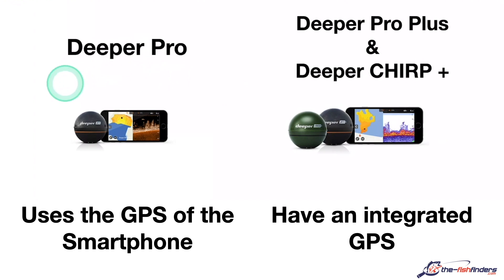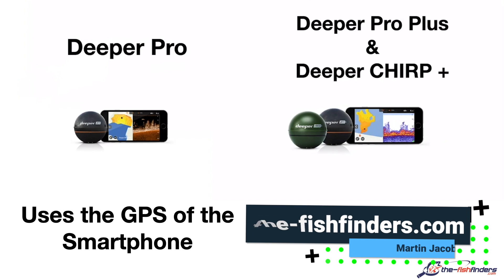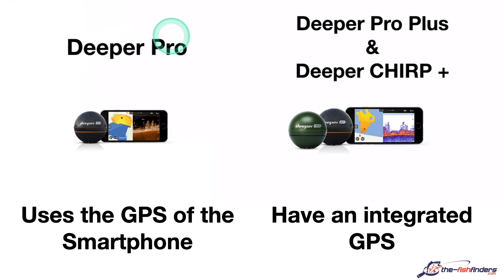There is a small difference with the Deeper Pro. It is one of the first Deeper models and has no built-in GPS, but instead uses the GPS data from the smartphone. It makes absolutely no sense to cast your Deeper Pro when your mobile phone with the GPS data is in your bag. To put it bluntly, your Deeper Pro can only be used to create maps on the boat by attaching the Deeper to the boat and placing the mobile phone nearby. This way, the GPS data from the mobile phone is included while the depth data is recorded.